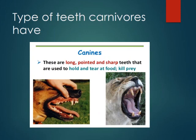Types of teeth carnivores have: Carnivores have quite small incisors, which are used for grasping, not cutting. They have long and strong canines, and thin sharp premolars and molars used for slicing muscle and other tissues.